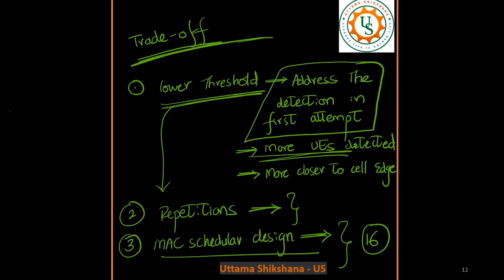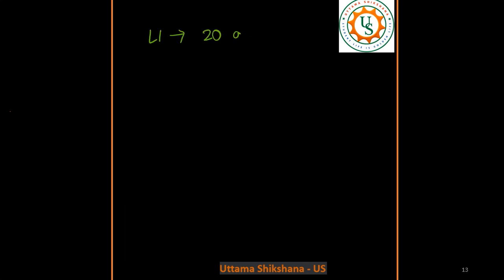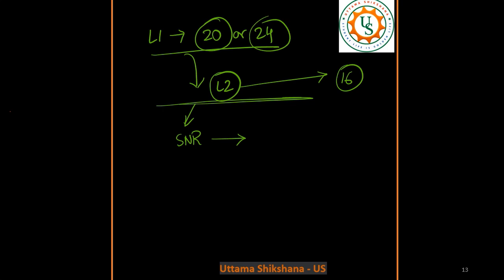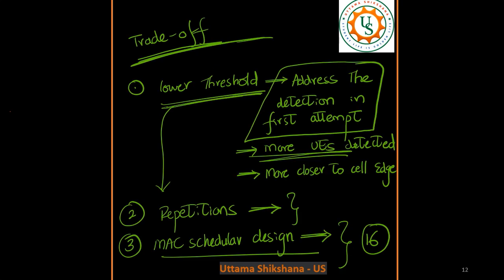Even if L1 detects 20 or 24 UEs and reports them to the L2 layer, L2 would ask for many parameters — one of which is SNR. SNR for all these UEs would be reported. But L2 knows it can address only 16 UEs at most. Even though 20 are reported to L2, L2 will choose the best 16 based on the best SNR — the first 16 UEs having very good SNR will be chosen for further processing.